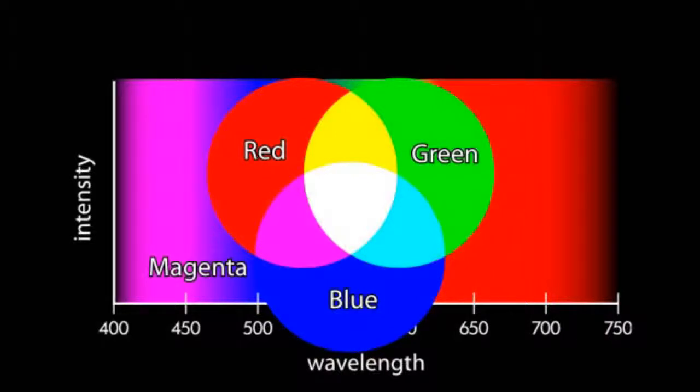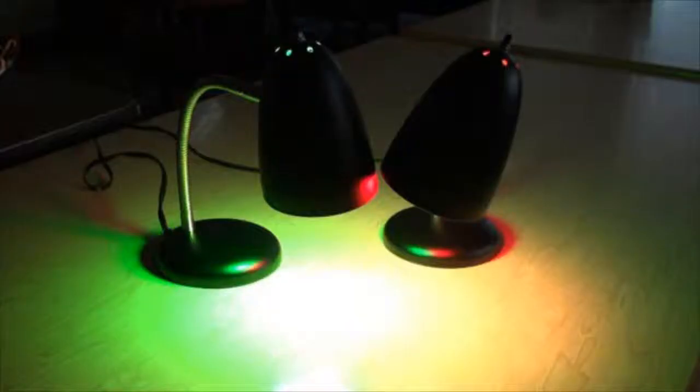Such as magenta, cyan, and yellow. We can use the RGB model to explain why combining red and green light appears yellow.